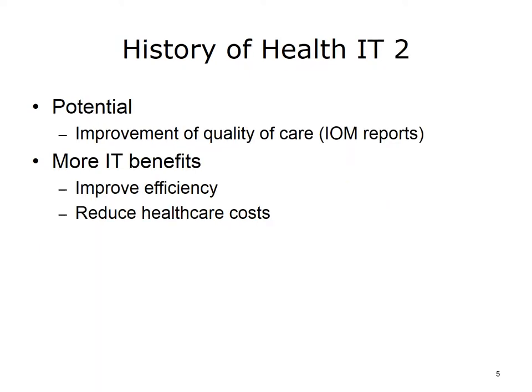Hospitals began to put more emphasis on quality improvement beginning in the early 1990s. By the early years of the 21st century, in part as a result of a series of reports by the U.S. Institute of Medicine, or IOM, it was recognized that health information technology could be harnessed for health care quality improvement. The IOM, now known as the National Academy of Medicine, is part of the National Academy of Sciences, a non-profit organization that provides advice on key medical issues. Information technology also was seen as a way to improve efficiency and reduce health care costs by reducing duplicate testing, saving time, and preventing medical errors.